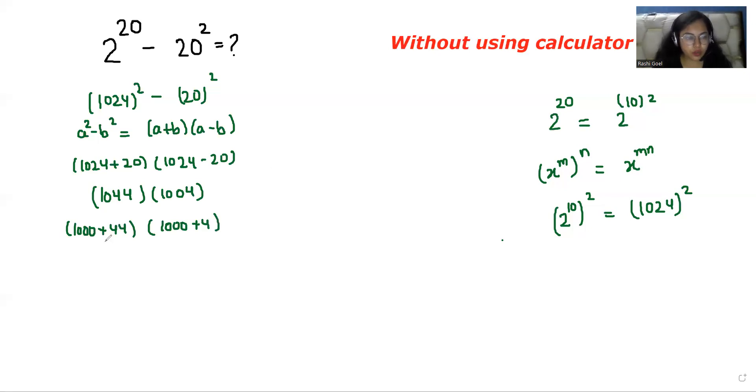Now we are using the identity (x+a)(x+b) equals x^2 + x(a+b) + ab.